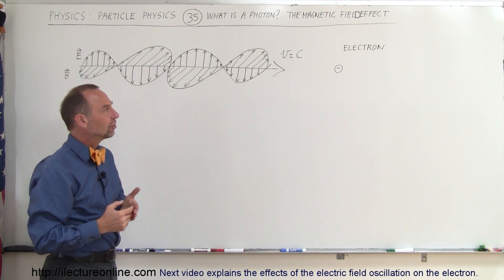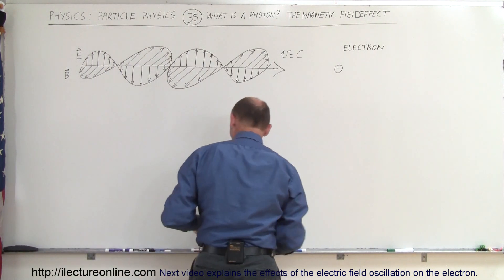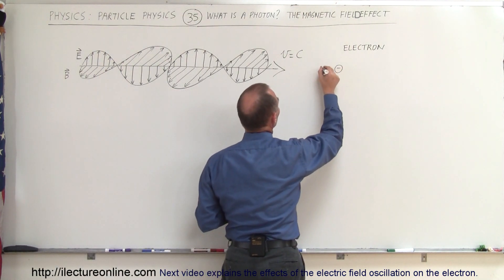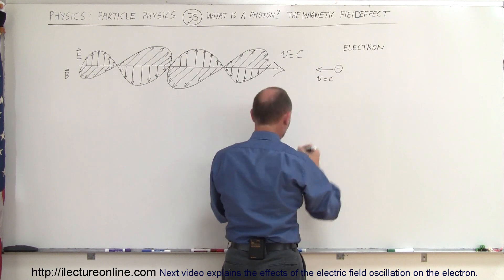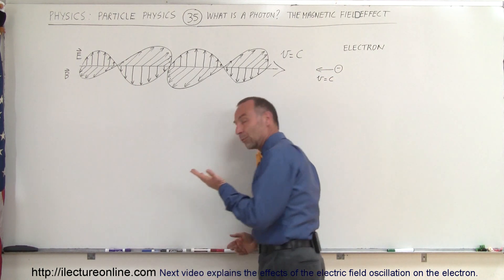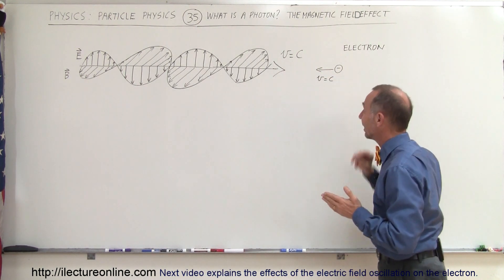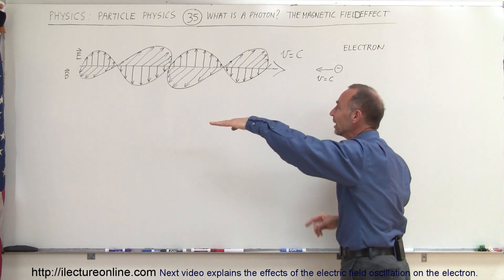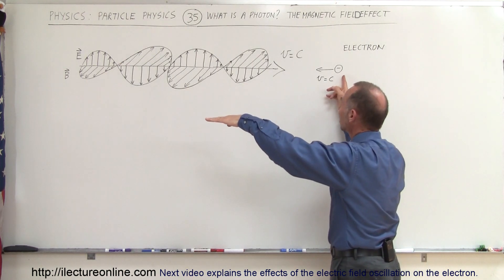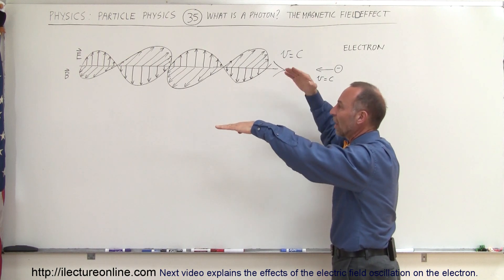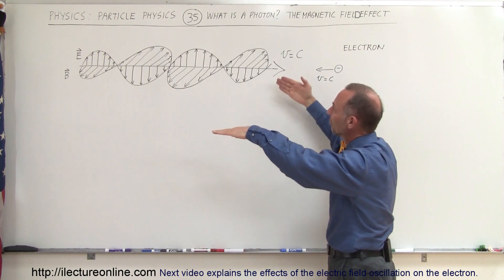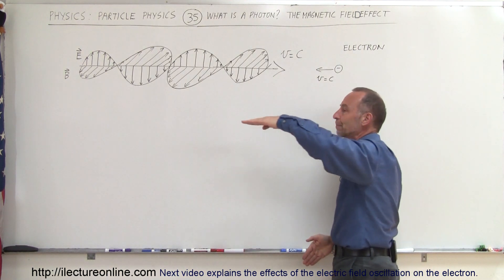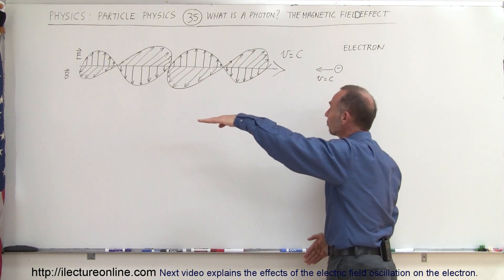Imagine that the photon is flying in this direction at the speed of light, so in this case V equals C for the electron. We use the left-hand rule because the electron is a negative charge, and so we point our fingers in the direction of the velocity of the electron towards the magnetic field that's oscillating — actually going sideways. So here we have the electron going this way.